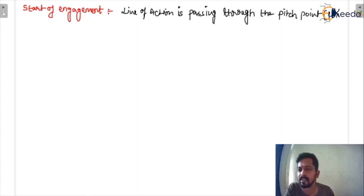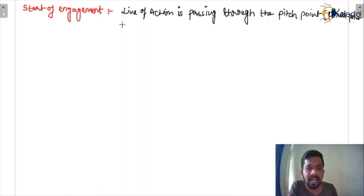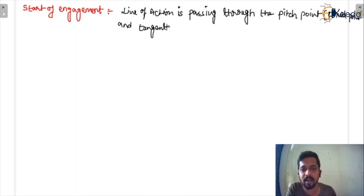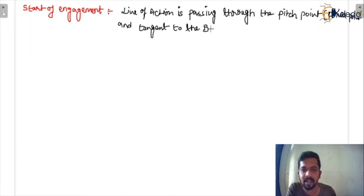The pitch point is a fixed point on the line connecting the centers of rotation. Additionally, the line of action is tangent to the base circle. These are the key properties at the start of engagement.